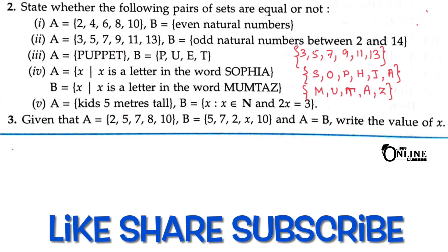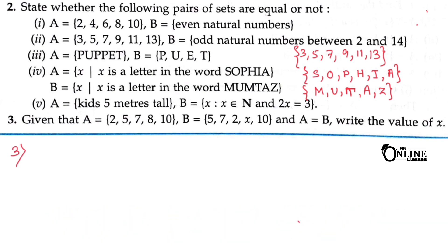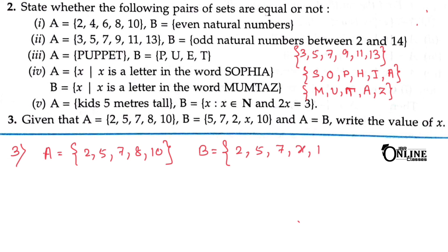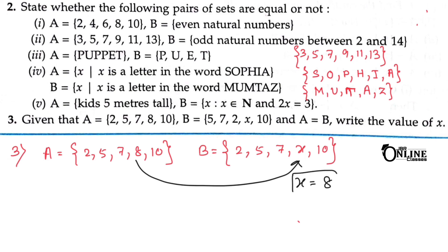Sum number 3: given that A equals a certain set and B equals another set, and A equals B. That means each and every element of A equals the corresponding element of set B. Rearranging the elements — 2, 5, 7, x, 10 — it is easy to find that x equals 8.